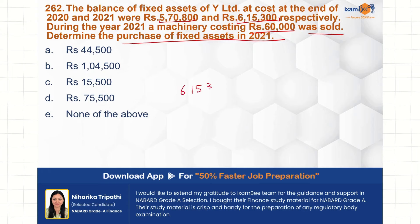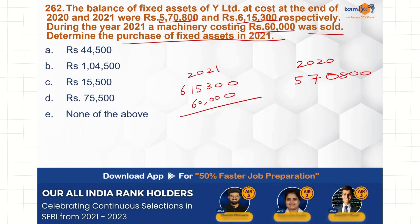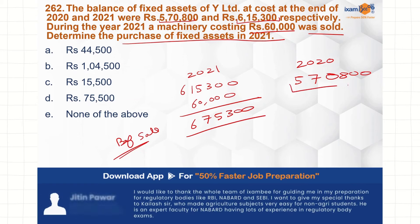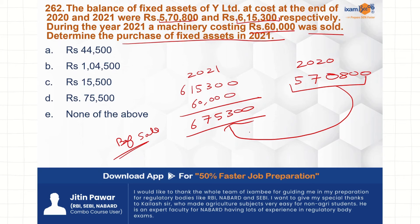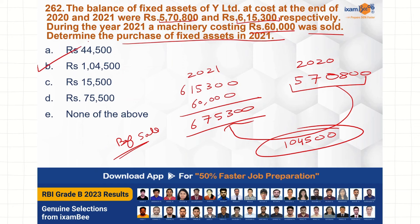The 2021 closing balance is 6,15,300 and the 2020 opening balance was 5,70,800. Since a machine of 60,000 was sold in 2021, before the sale the machinery cost would have been 6,75,300. The increment over 5,70,800 is 1,04,500, which is the purchase amount in 2021. Option B is the correct choice.